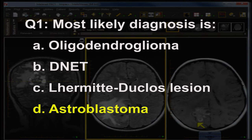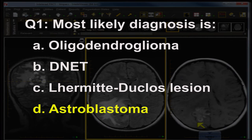Oligodendroglioma is an adult lesion — it wouldn't occur in a 10-year-old. Oligodendroglioma is seen in the frontotemporal centrum semiovale, and it calcifies in almost every case. D-net is a lesion that has a proclivity to the temporal region; it is usually not this large and usually not associated with this much edema, but that would be the main differential diagnostic consideration.